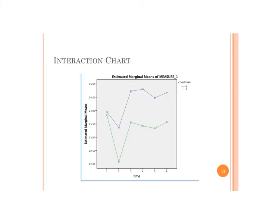Looking at the interaction chart, the lines deviate from parallel. Both groups start at about the same place — consistent with the hypothesis and random counterbalancing. There is a bigger decrement in condition two (the 3RM) than in the super-maximal, followed by a bigger increase in the super-maximal. The 3RM also plateaus faster over time than the super-maximal.